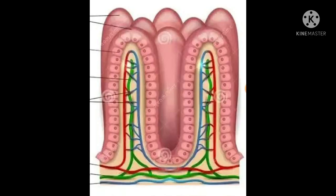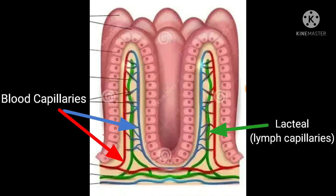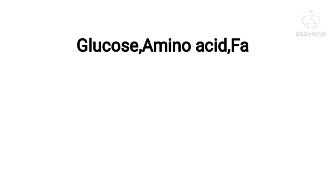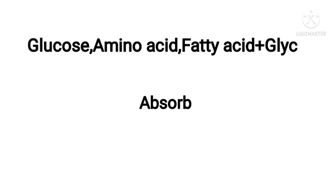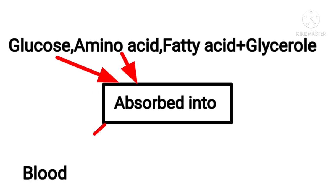They also contain blood capillaries and lacteals, which are the lymph capillaries. Water-soluble simple nutrients like glucose and amino acids are absorbed into the blood. The lacteals are filled with lymph.